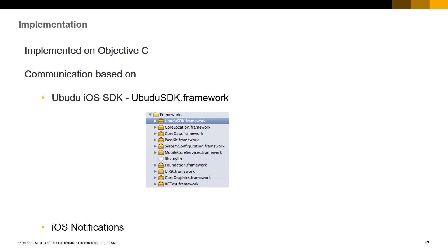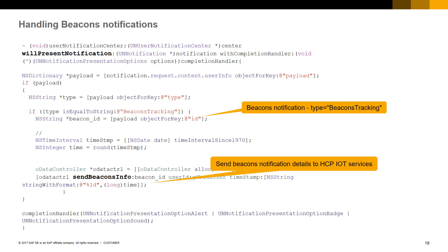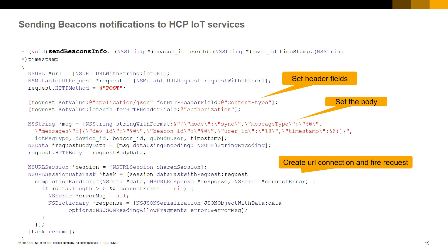To implement the iOS mobile application, we are using Objective-C language. The development is based on the Ubudu iOS SDK framework delivered by our beacons provider. This framework helps us handling the communication between the mobile application and the beacons. The first task of the mobile application is to receive notifications from the beacons and send the details to the SAP Cloud Platform IoT Services. In the code presented here, the notification is received by the mobile application and calls the send beacons info method to send the details to the SAP Cloud Platform IoT Services.